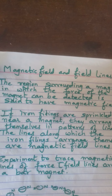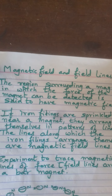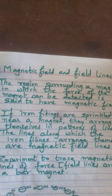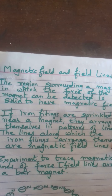Next, we will see magnetic field lines. Suppose you take a drawing board, keep a bar magnet on it, and sprinkle iron filings around it. The iron powder will arrange itself in particular lines around the magnet. The lines along which the iron filings align themselves are called magnetic field lines.